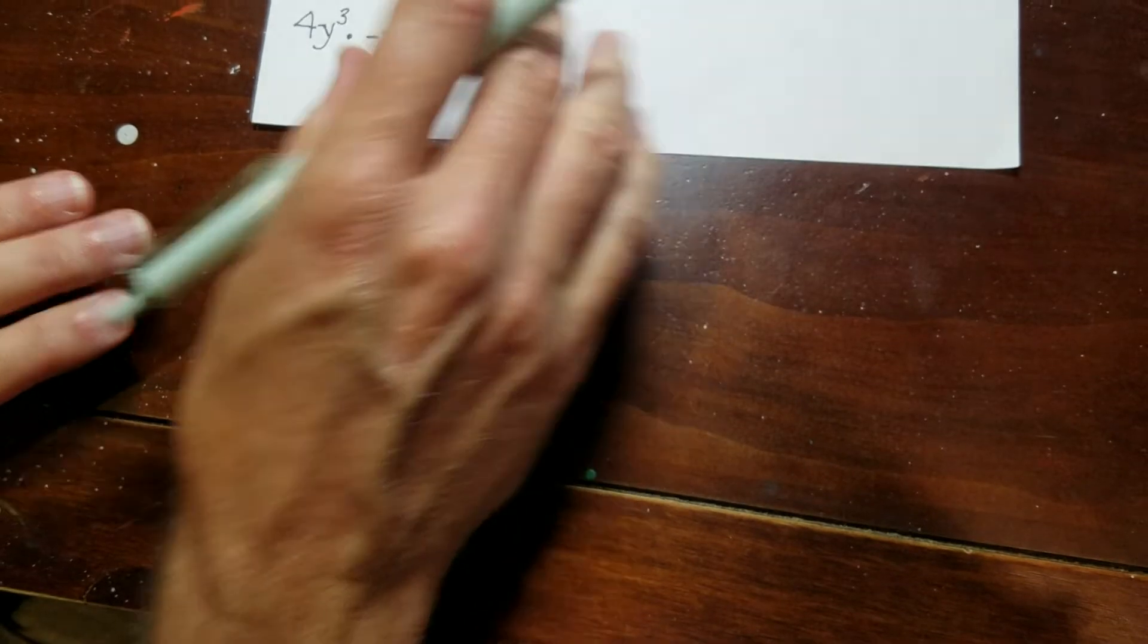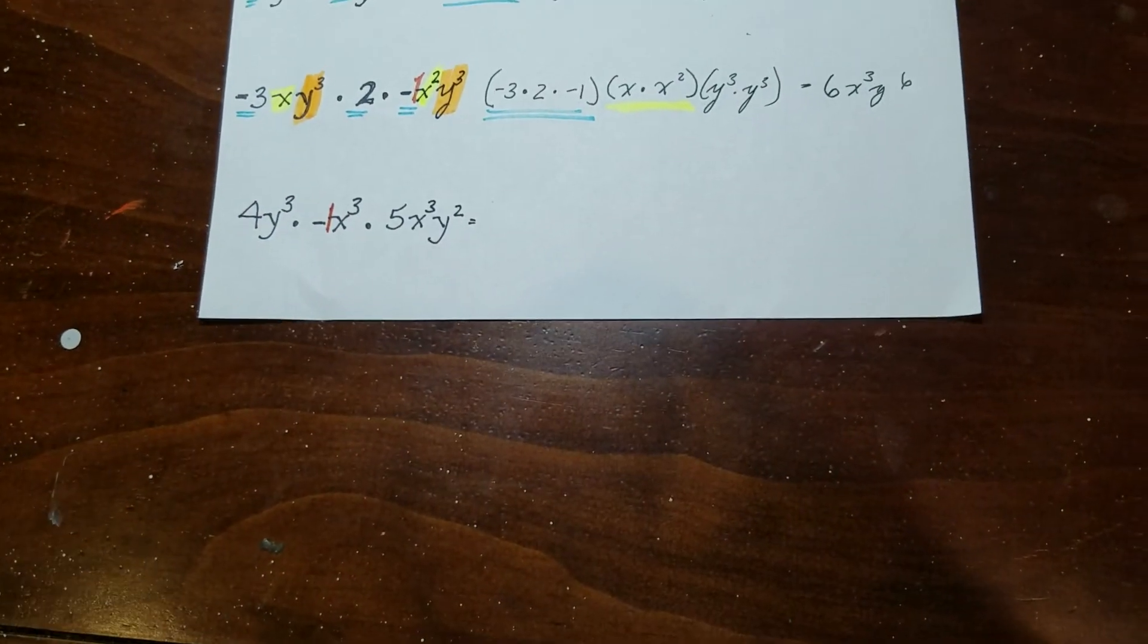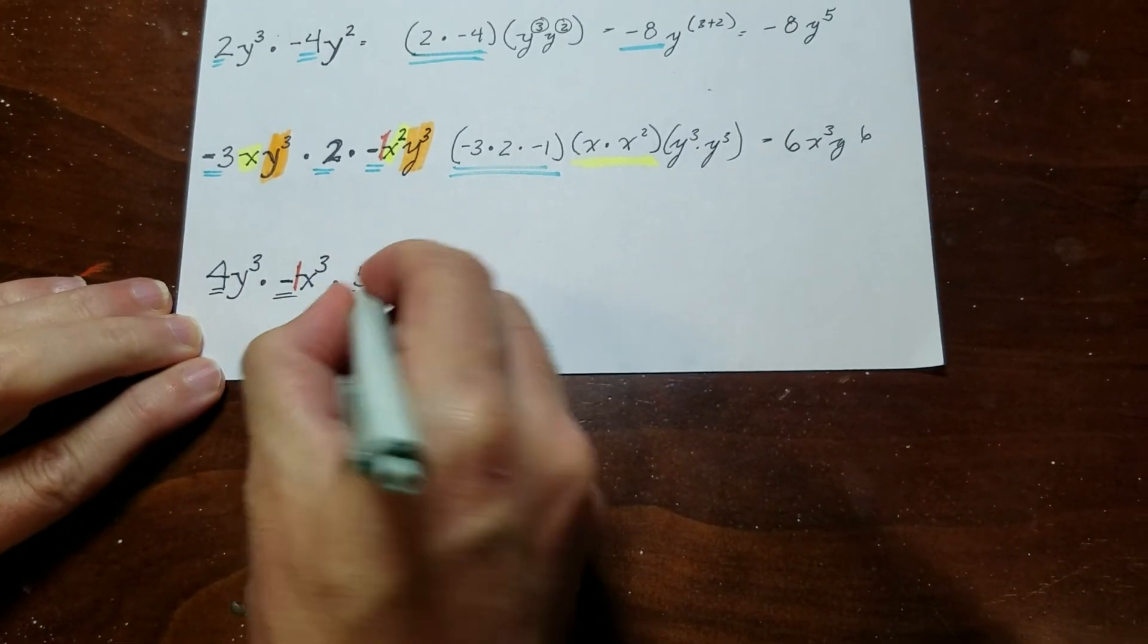And the last one. So there it is again. That negative x. So I'm going to pop a 1 in there. So I'm going to put my numbers first. So I have a 4, a negative 1, and a 5.